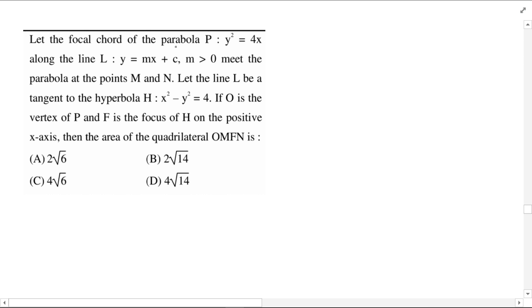Let the focal chord of the parabola P, that is y² = 4x, along the line L, that is y = mx + c where m is greater than 0, meet the parabola at the points M and N. Let the line L be a tangent to the hyperbola H, that is x² - y² = 4. If O is the vertex of P and F is the focus of H on the positive x-axis, then find the area of the quadrilateral O, M, F, N.